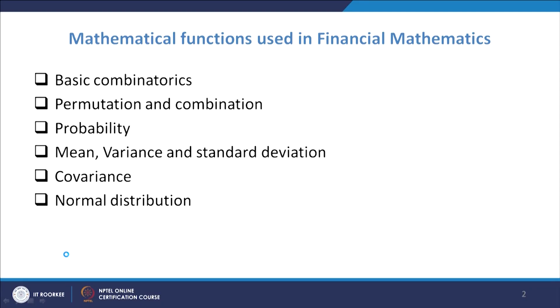We will also have some idea about probability, and then we will discuss statistical terminologies like finding the expected value — also known as mean — then finding the variance, how the variance is calculated, how there is variability among the data and how that is quantified. There is also a standard term known as standard deviation, and we will also know how to calculate that.